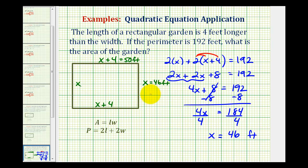And now we have the information we need in order to find the area of this garden. The area of a rectangle is equal to length times width. So in this case, the area is going to be equal to 46 feet times 50 feet. So the area is equal to 2300 square feet.